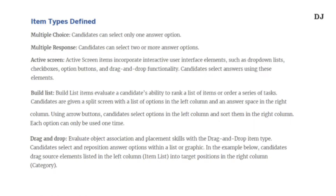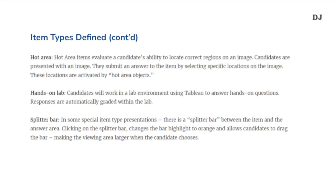The first and last section will be knowledge-based, and the second section is the hands-on section. Here is today's focus: the item types. Eight different item types are included. Multiple choice and multiple response are selection questions. Active screen, build list, drag and drop, hot area, and split bar are more interactive ways to answer the questions. The hands-on lab is for using Tableau to answer the questions.